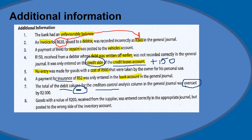Number 8: goods with a value of 200 rand received from a supplier were entered correctly in the appropriate journal but posted to the wrong side of the inventory account. Since we received these goods — we bought them — we should have debited the inventory account. We therefore need to make two entries: first to cancel the wrong entry, and second to repeat it correctly so that the inventory account reflects the correct effect.